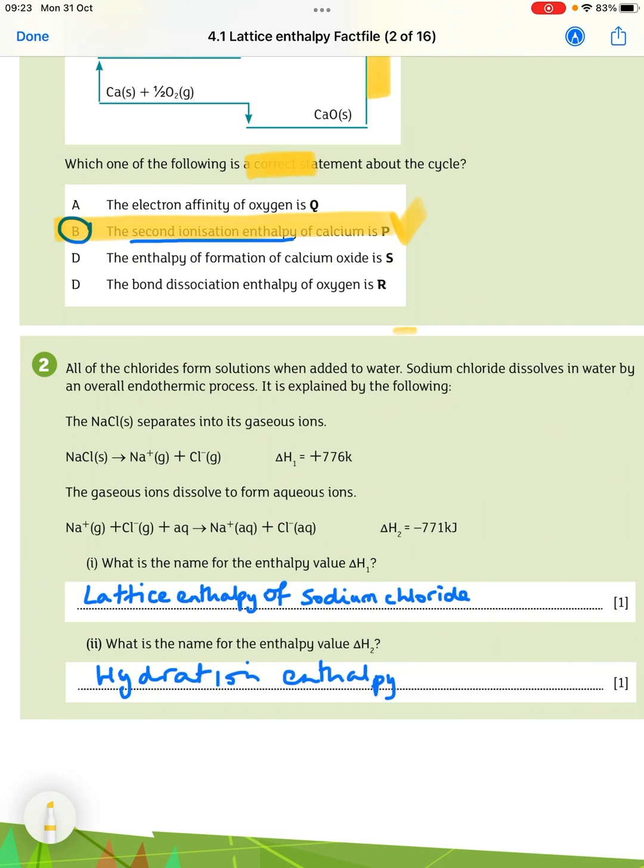Question 2. All of the chlorides form solutions when added to water. Sodium chloride dissolves in water by an overall endothermic process. It's explained by the following. So the sodium chloride solid separates into its gaseous ions. In this equation, NaCl solid gives you Na plus gas and Cl minus gas.